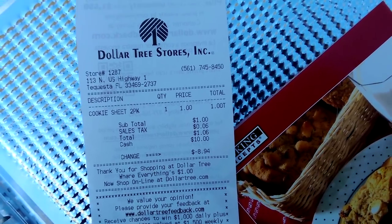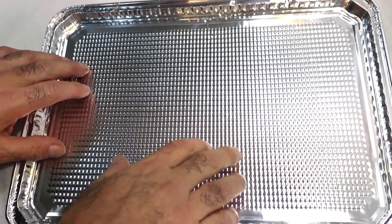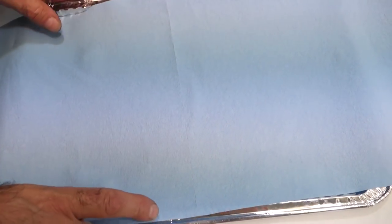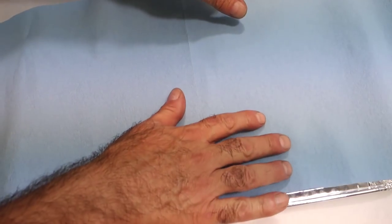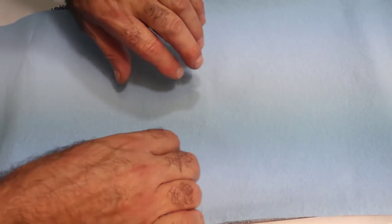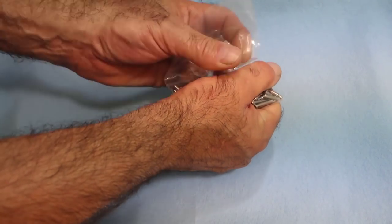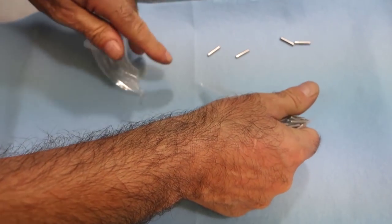Dollar six with tax, not bad. We got a tray from the dollar store. What you want to do is line the tray with some paper towel. Paper towel allows the needles not to roll around and bounce on the tray.